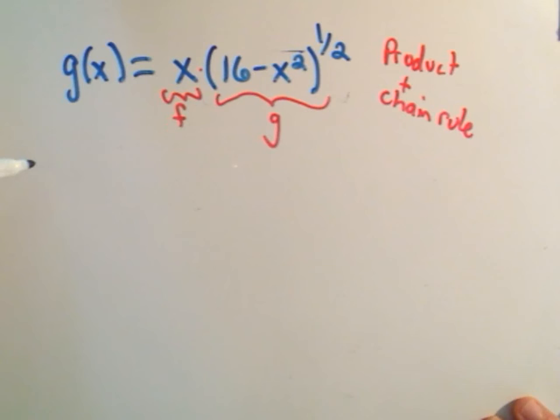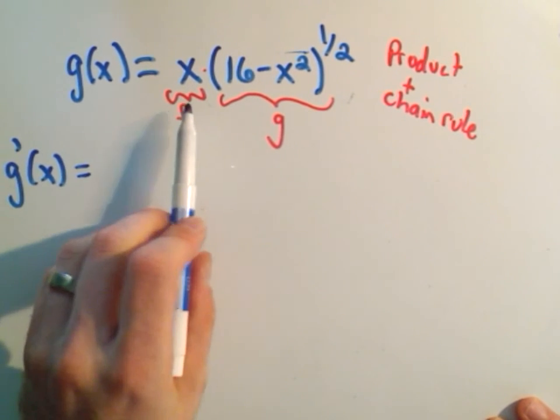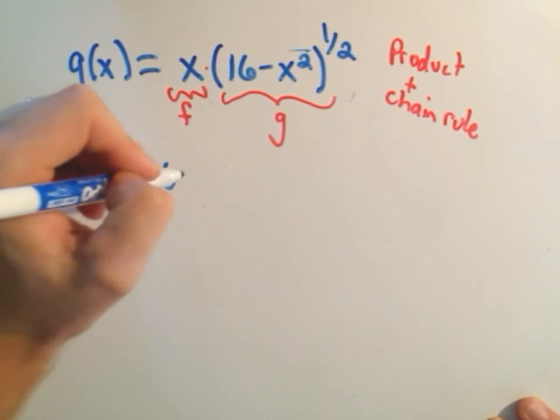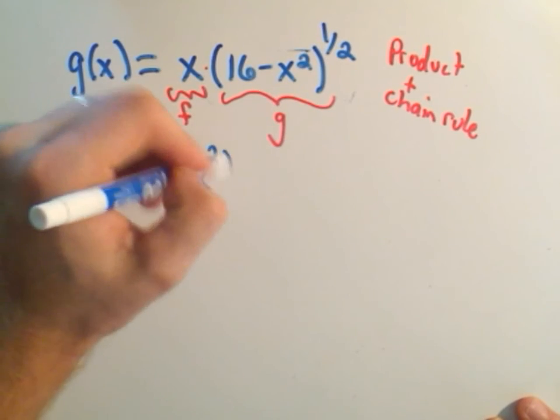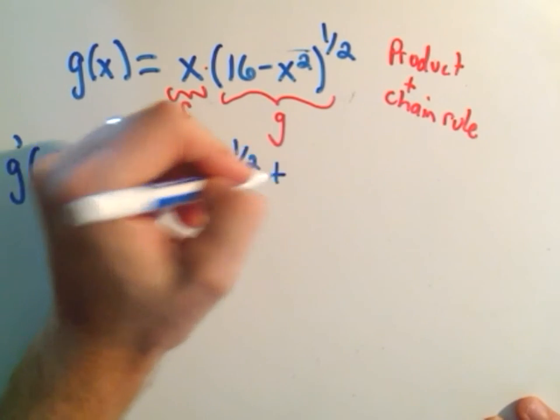Alright, so when I go to take the derivative, I've got to use the product rule. So if I take the derivative of f, I'll get 1, I leave the other part alone, 16 minus x squared to the one-half power. The product rule, I remember, has a plus in it.